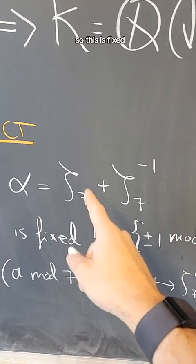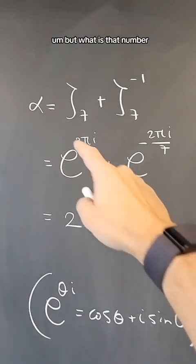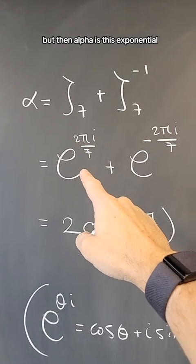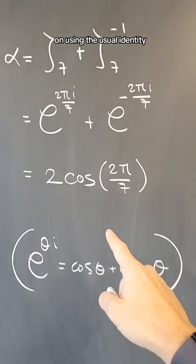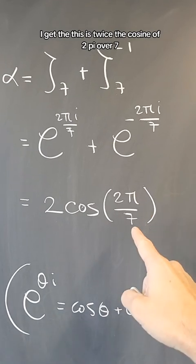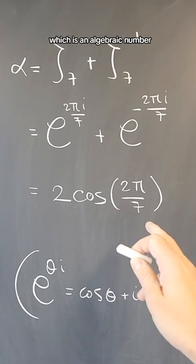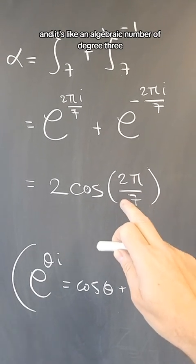So this is fixed, but what is that number? Alpha is this exponential plus this exponential. And using the usual identity, I get that this is twice the cosine of 2π over 7, which is an algebraic number of degree 3.